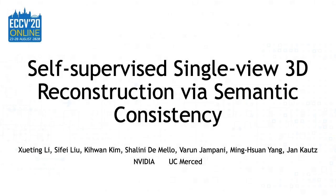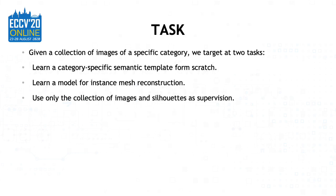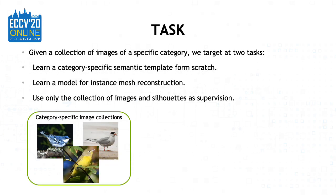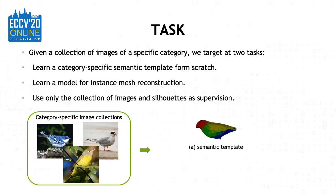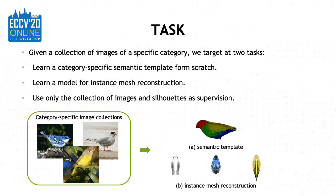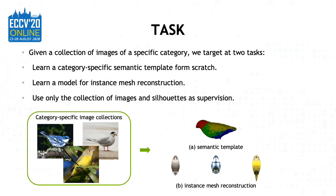We introduce self-supervised single-view 3D reconstruction via semantic consistency. Given a collection of images in a specific category, we target at two tasks. The first is to learn a category-specific semantic template. The second is to learn instance-specific mesh reconstruction. Our supervision only includes the collection of images with their silhouettes.